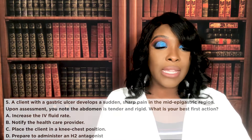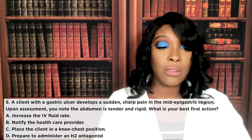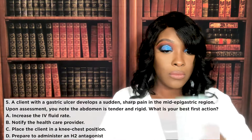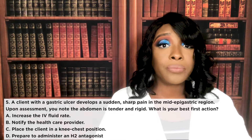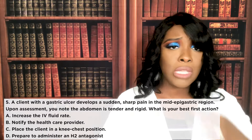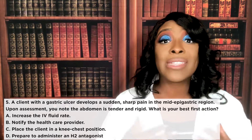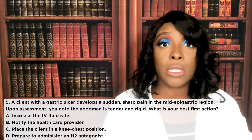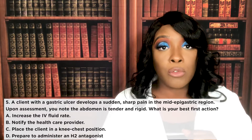A client with a gastric ulcer develops a sudden sharp pain in the mid-epigastric region. Upon assessment you note that the abdomen is tender and rigid. What is your best first action? A) Increase the IV fluid rate. B) Notify the doctor. C) Place the client in knee-chest position. Or D) Prepare to administer an H2 blocker. The correct answer is B — notify the physician. This is a medical emergency; you suspect the patient is bleeding due to perforation.